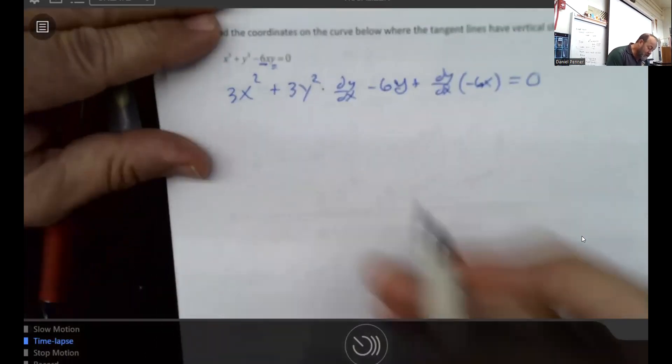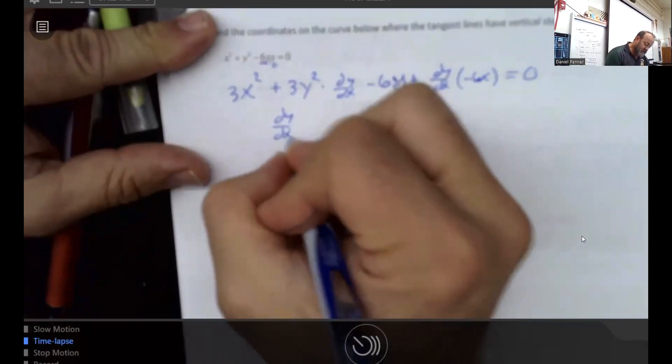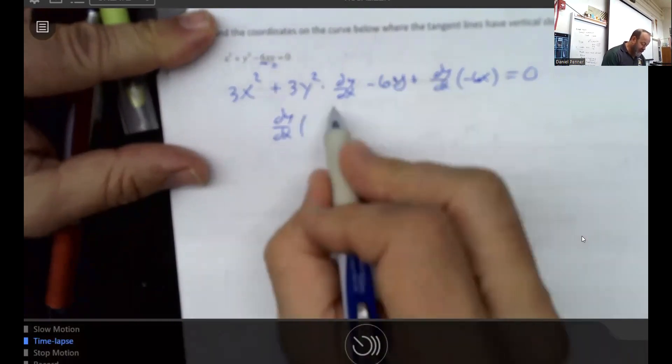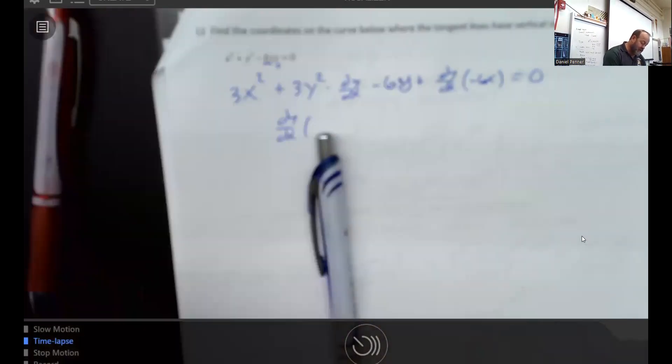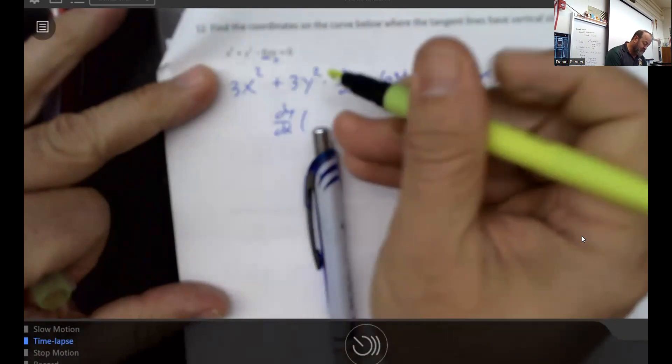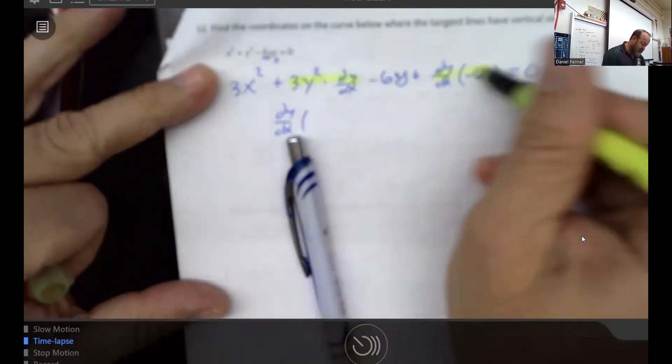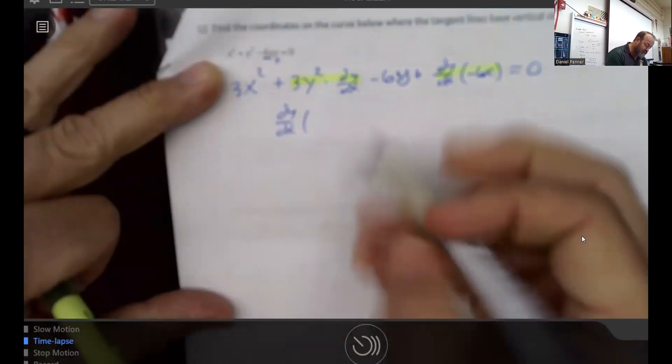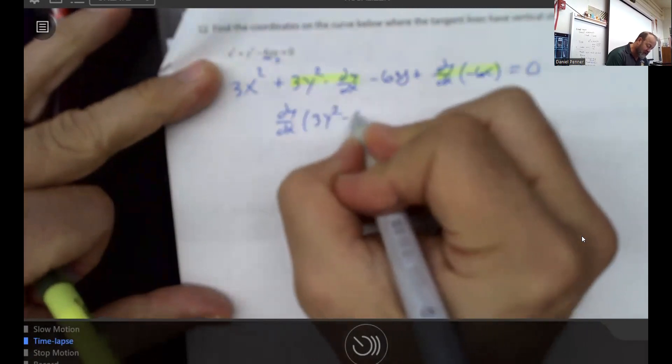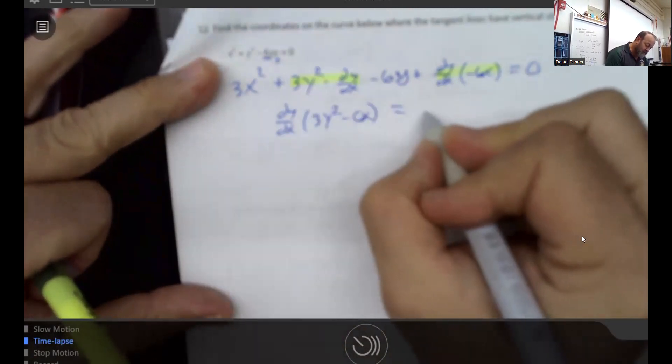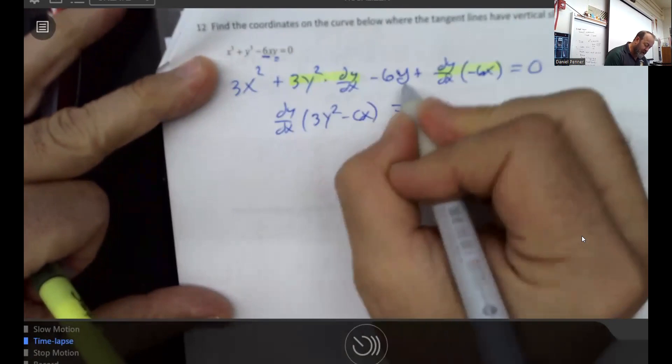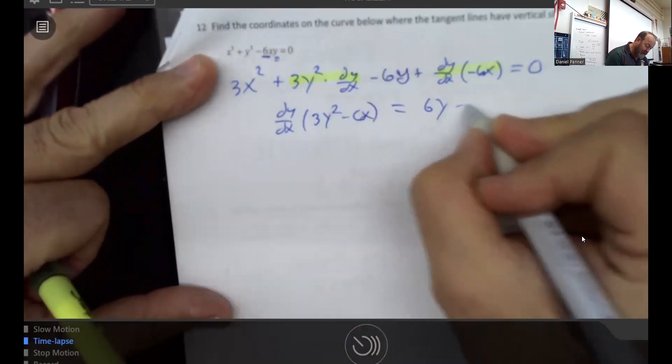So again, the first thing I need to do is find dy/dx. So dy/dx would be a factor of these two pieces right here. There'd be a 3y² attached to this portion and a -6x attached to that portion. So a 3y² - 6x. And I'm going to move these other two pieces to the other side as a positive 6y and a -3x².